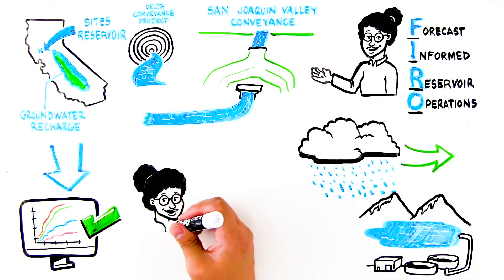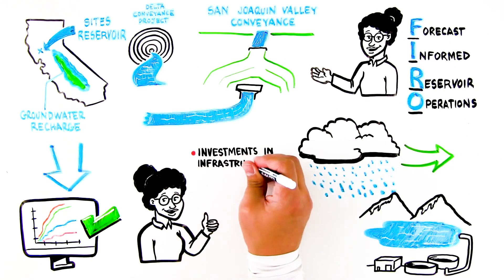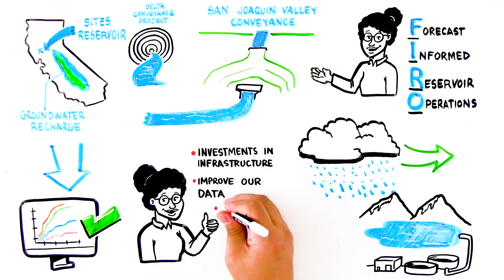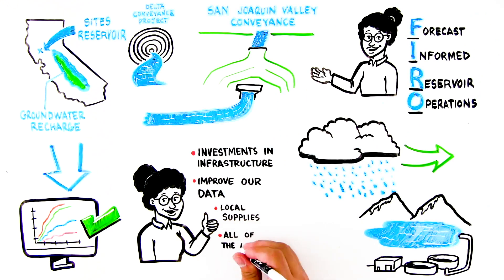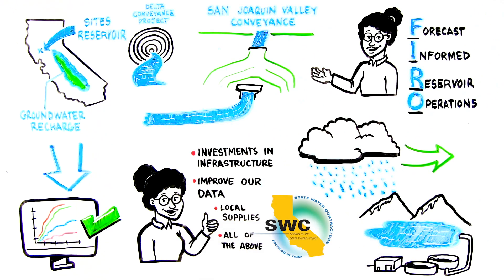By working together to make investments in our infrastructure and improve our data while continuing to develop more local sources of water supplies, we can take an all-of-the-above approach that will secure California's water resources amidst our changing climate and hydrology.